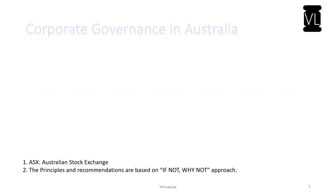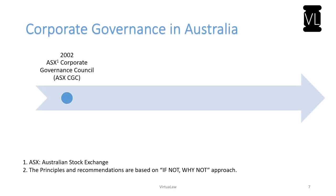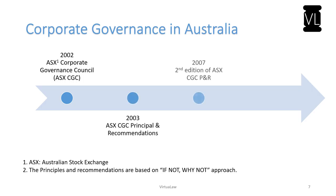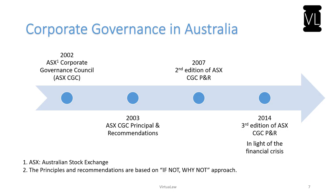Now let us look into corporate governance in Australia. In 2002, the Australian Securities Exchange Corporate Governance Council (ASX CGC) was constituted, which produced principles and recommendations in 2003. The second edition of these ASX CGC principles and recommendations was released in 2007, and the third edition was released in 2014, incorporating inputs from the financial crisis. Australia follows an 'if not, why not' approach — if you don't comply, then explain why you don't comply with the corporate governance provisions prescribed by the Australian Stock Exchange.